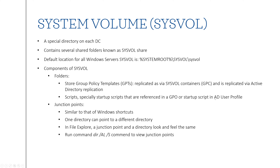What are GPOs? What are AD user profiles? I will explain those in the next few slides, so just keep in mind what folders are used for. Junction points are similar to Windows shortcuts — they are specifically for Active Directory and domain controllers. One directory can point to a different directory using junction points. In File Explorer, junction points and regular directories look and feel exactly the same.